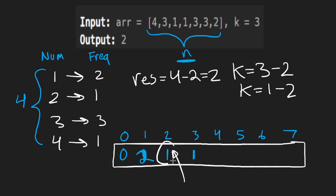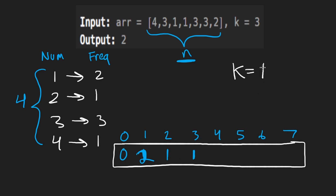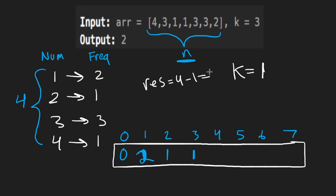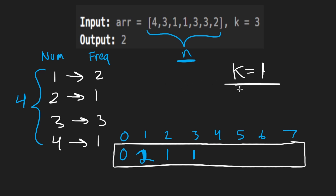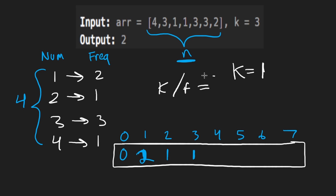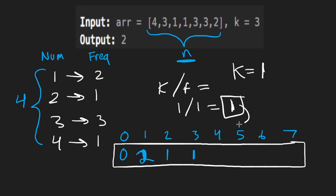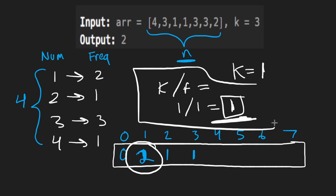To handle the partial removal case: if K is ten and the frequency is seven with two elements, ten divided by seven rounded down is one — so we remove one. If the frequency is eleven, ten divided by eleven rounds to zero, meaning we can't remove any. We subtract this computed 'remove' value from the result. After the else branch, we break out of the loop since we've exhausted our budget. This math will make more sense looking at the code.